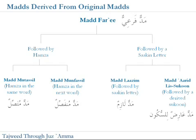Mad lazim: if the original madd is followed by a sakin letter — one that actually has a sukun on it — or if it's part of a consonant which has a shadda on it (which implies that the consonant has a sukun on it as well), then the derived madd is known as mad lazim. If the original madd is followed by a derived sukun, then it's known as mad arid lissukun. The derived sukun will be explained on a separate slide.